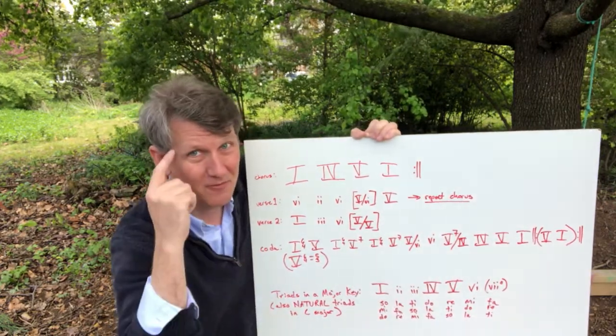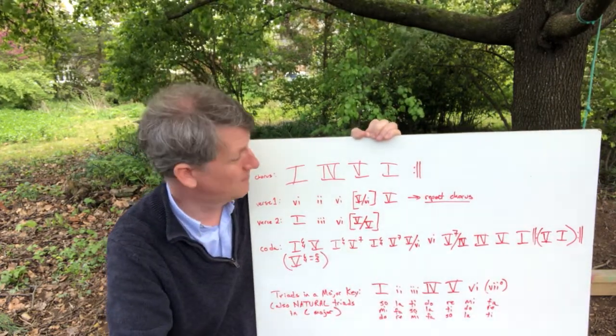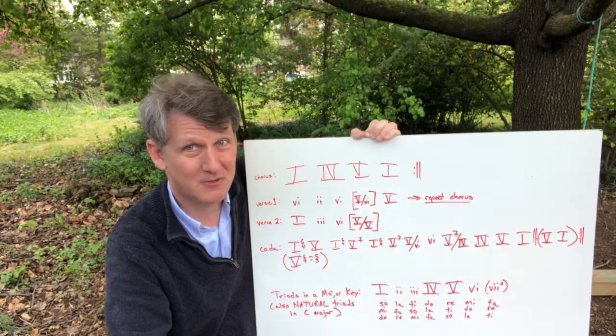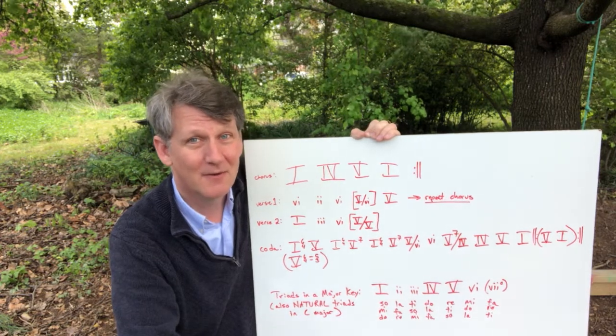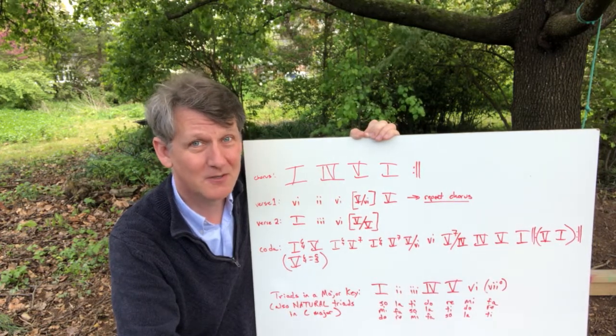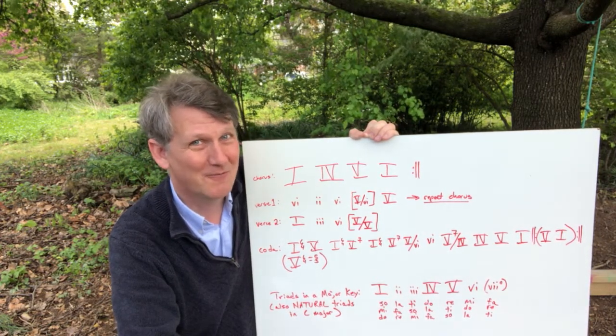So if you need to remember, those are just the three major triads in a key, one, four, and five. And let me tell you, there are so many songs that you know that are just built around one, four, and five.